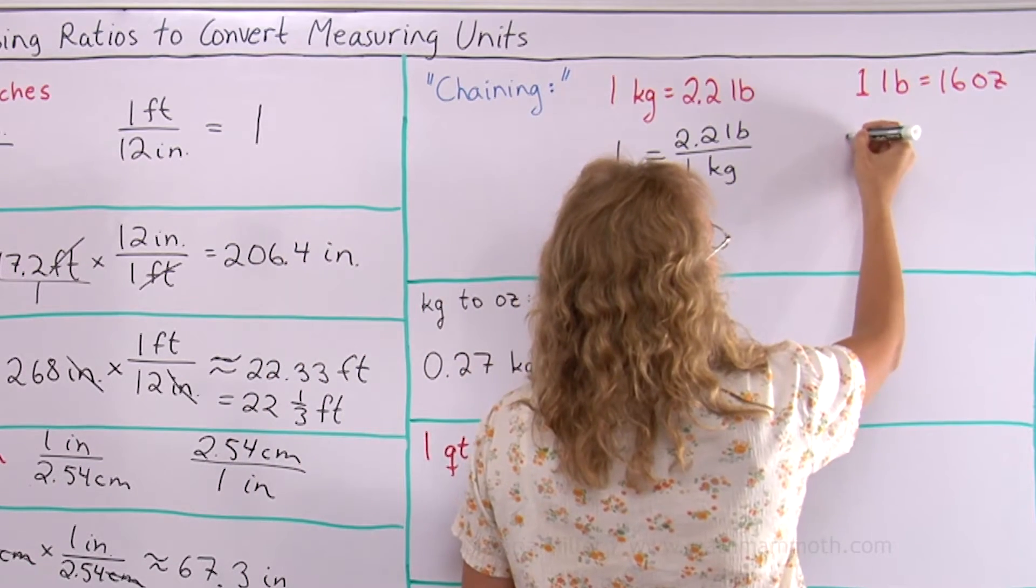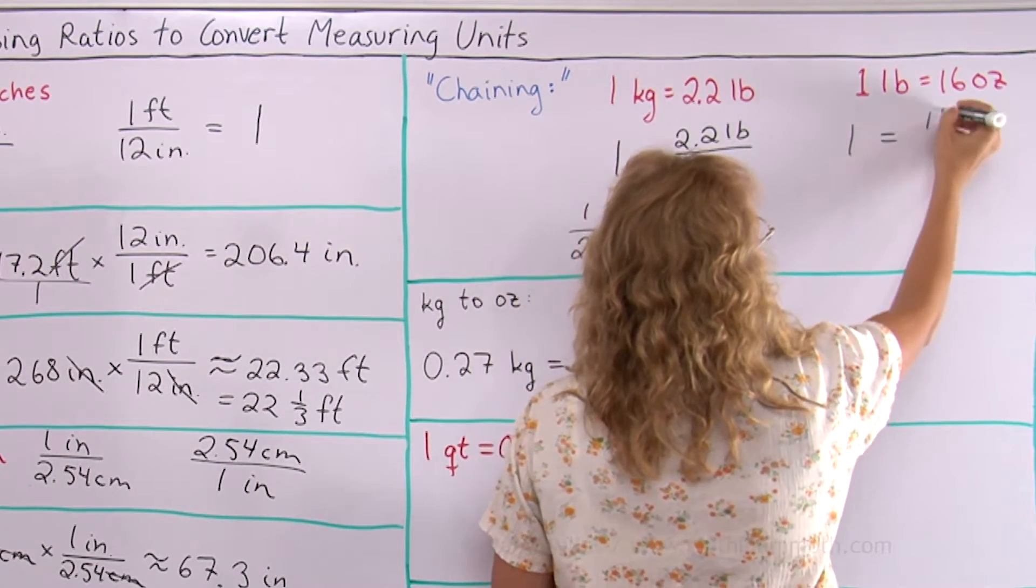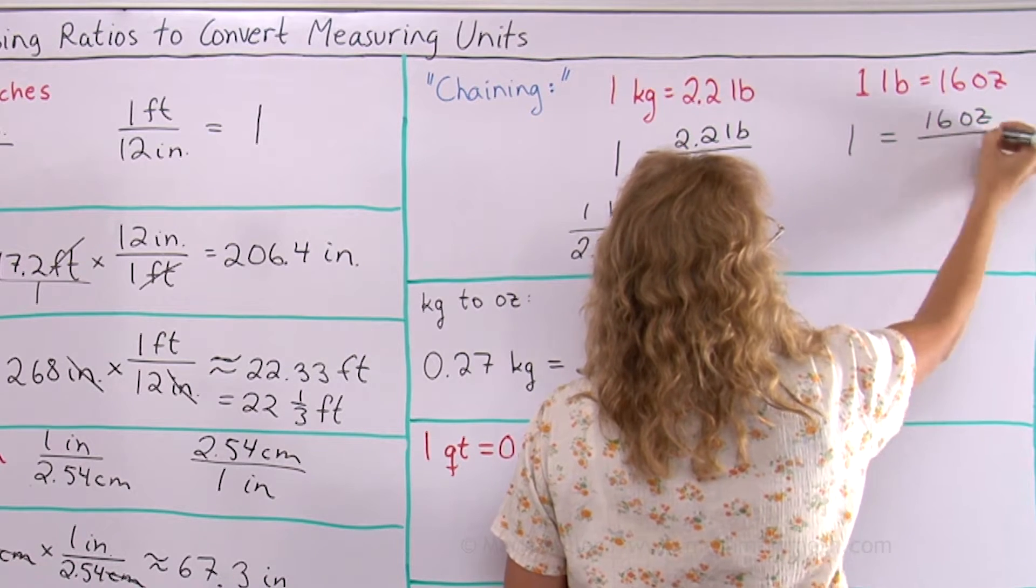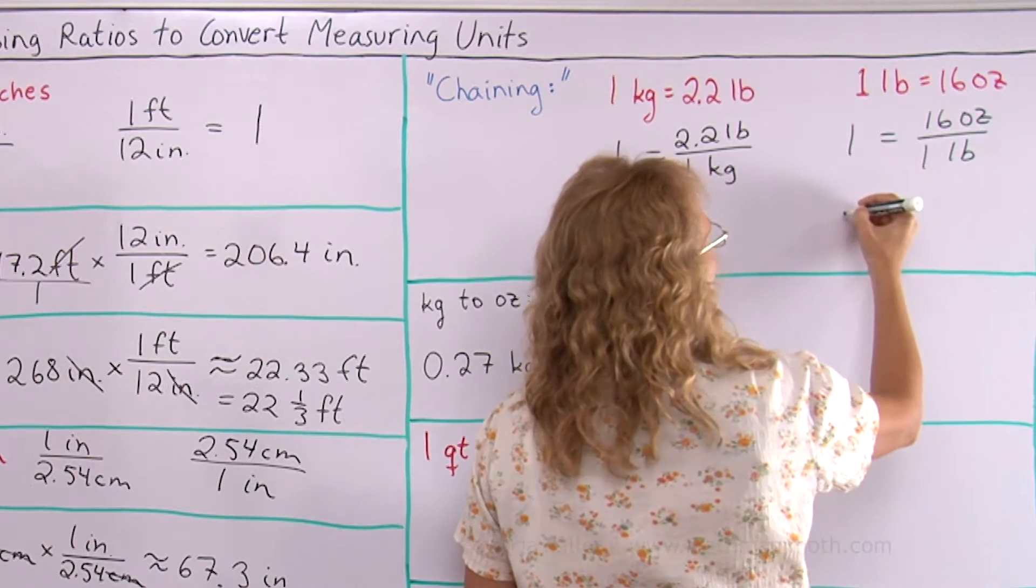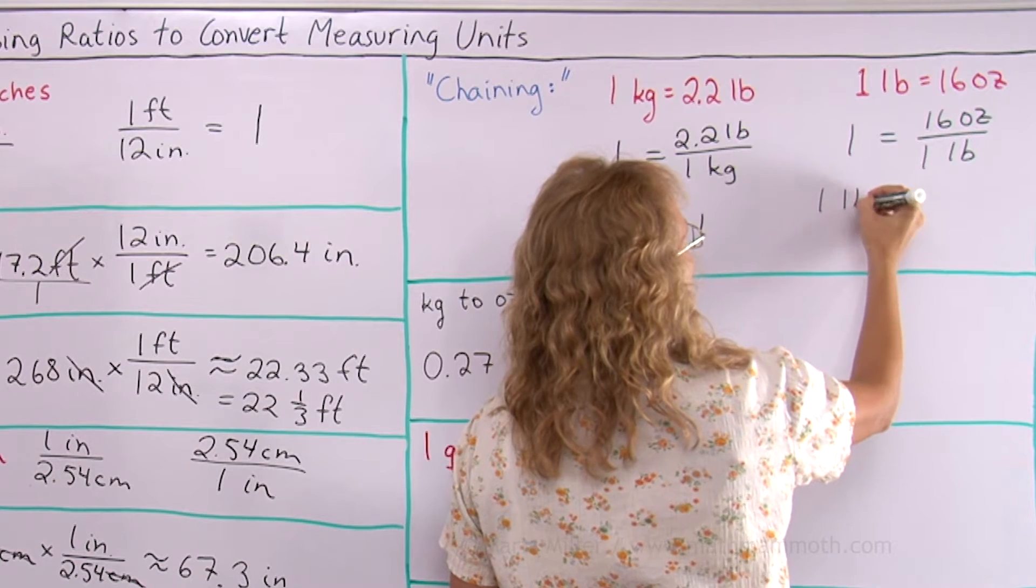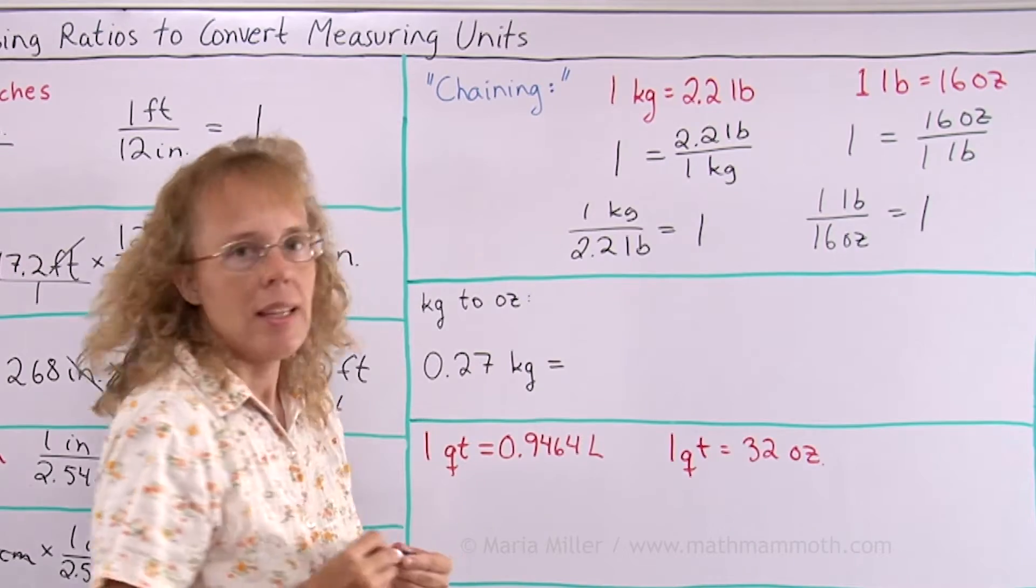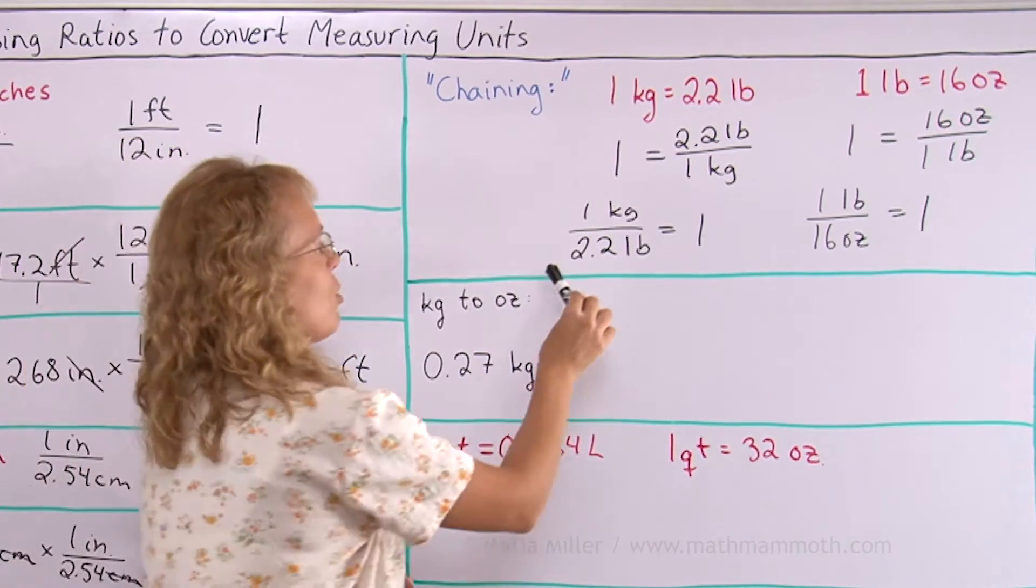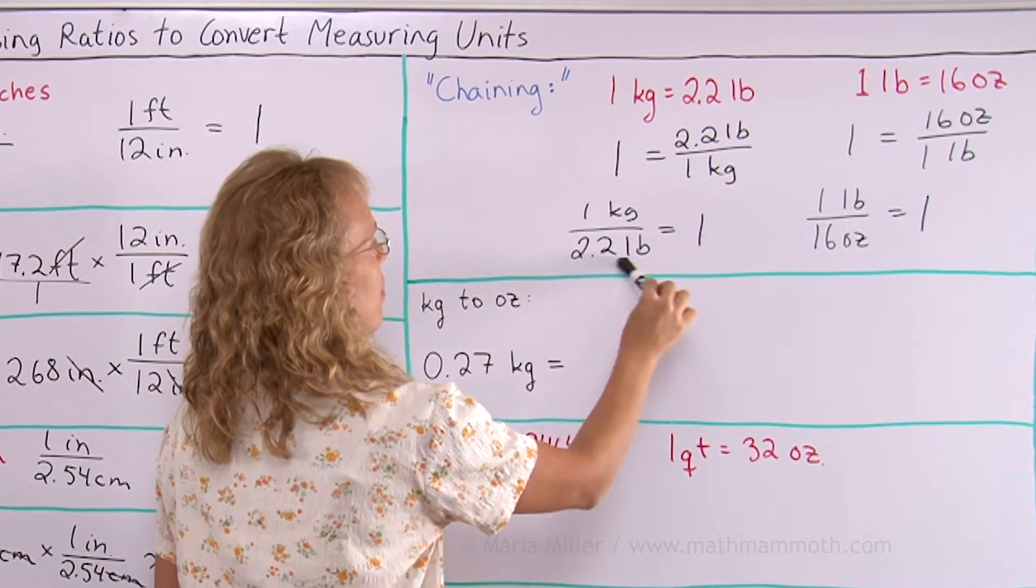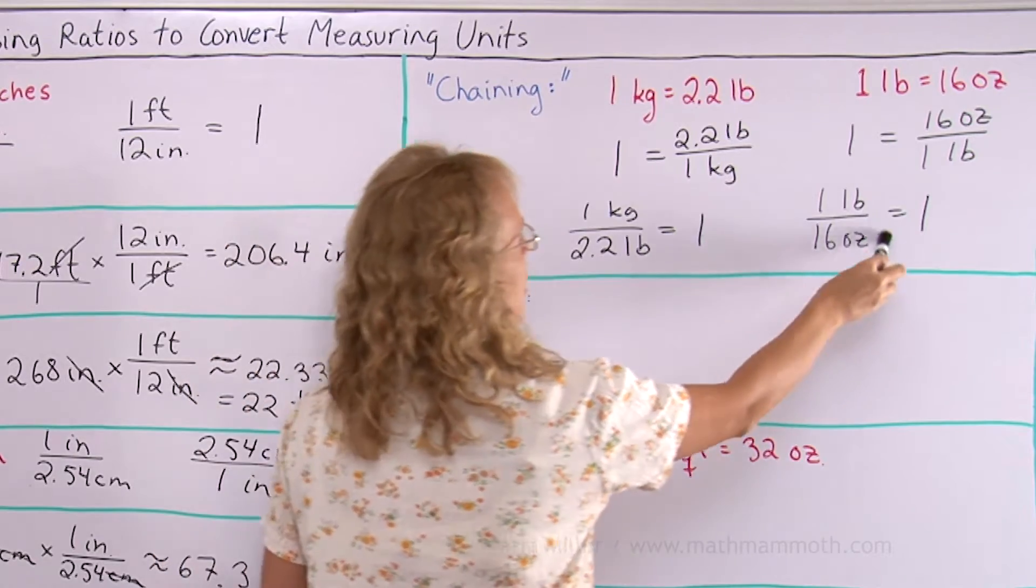And over here I will get either 1 equals 16 ounces divided by 1 pound. Or I can get 1 pound over 16 ounces equals 1. And then in my conversions I will just use this ratio here, this part here, or this part here.